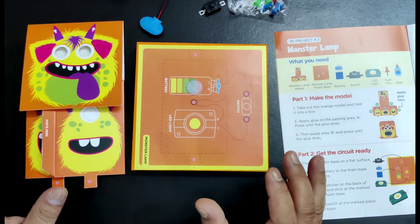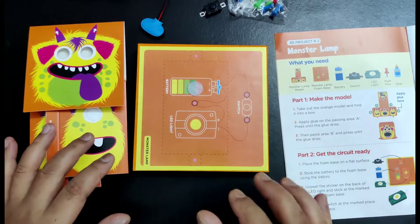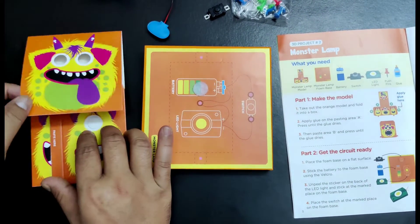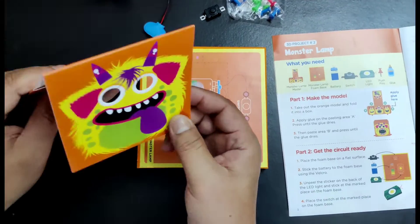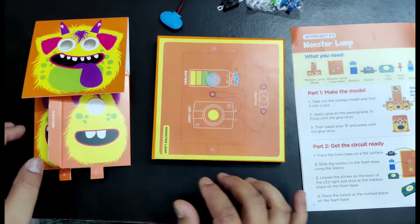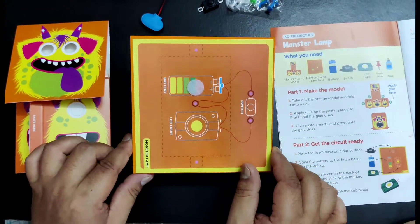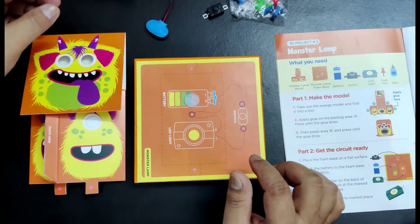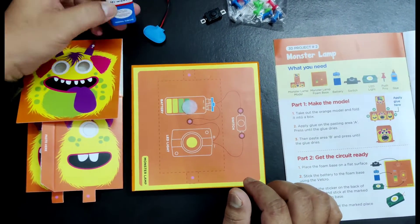Okay, so first we need monster lamp model. Here we have our monster lamp model, and then this is our monster lamp foam base. Don't forget the batteries to power. Here we have our battery and switch.